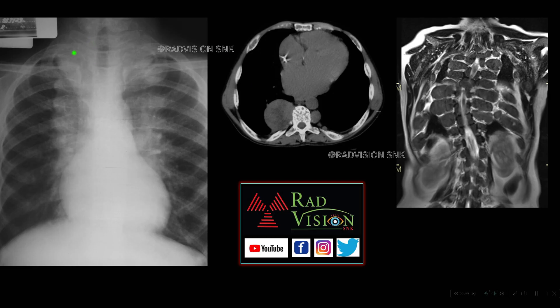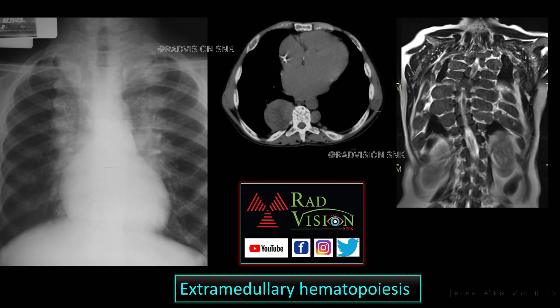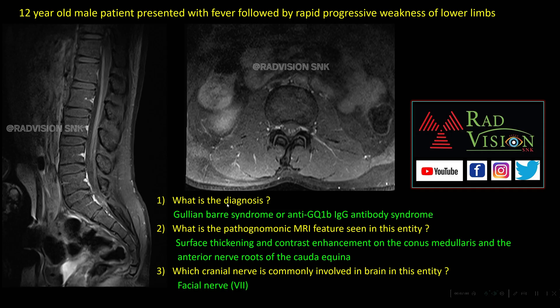Here you can see there are multiple paravertebral soft tissue density masses in the posterior mediastinum along with bony changes. On MRI, there are multiple symmetrical paravertebral soft tissue density masses typically involving the costovertebral junction — this is a classical case of extramedullary hematopoiesis.